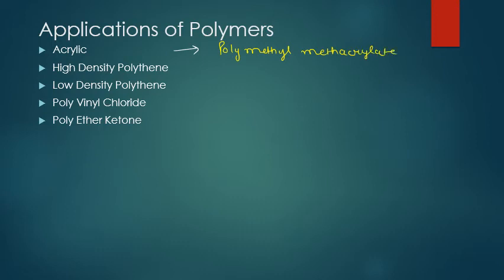Acrylic polymers like PMMA can be used as an alternative to glass. We can make small fish tanks and aquariums using acrylics, as well as visors, goggles, and helmet covers. They have weather-proofing qualities and so are used for outdoor glazing structures as a glass alternative.